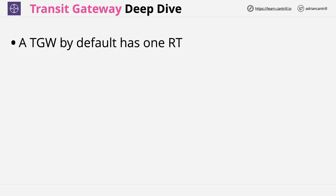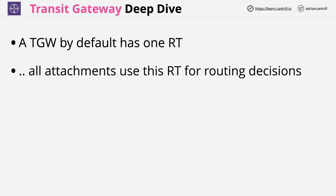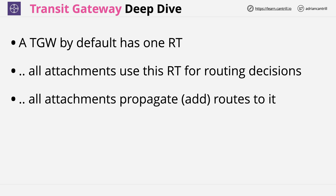A Transit Gateway, by default, has one route table. All attachments use this route table to make routing decisions. As traffic leaves an attachment, it uses the route table associated with that attachment. By default, all attachments propagate routes to this single route table, meaning every attachment adds the routes it knows about to the default route table. There is an exception to this — peering attachments — but I'll talk more about this later in the lesson.